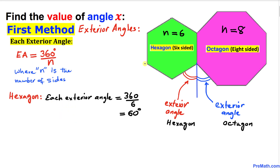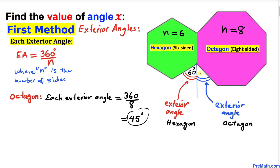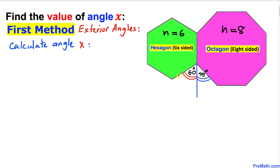For the green hexagon, each exterior angle is 360 degrees divided by n, which is 6, giving us 60 degrees — so this exterior angle is 60 degrees. For the purple octagon, each exterior angle is 360 degrees divided by 8, giving us 45 degrees — so this exterior angle is 45 degrees. Now we can see that angle x is the sum of these two exterior angles: 60 degrees on one side and 45 degrees on the other.